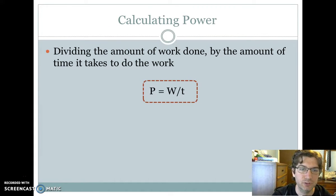To calculate power, we're just going to take that unit of work and divide it by time. Get that time unit in there. So work divided by time is going to be power.